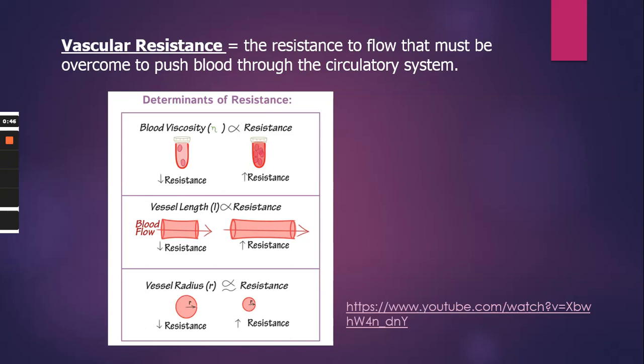Vascular resistance is the resistance to flow that must be overcome to push blood through the circulatory system. We know that the heart creates the blood pressure in our body, but there are factors that affect blood pressure — cardiac output, blood volume, and resistance. So vascular resistance plays a role in our overall blood pressure.